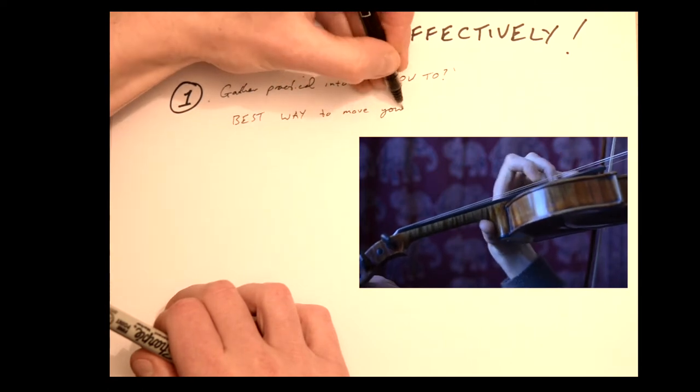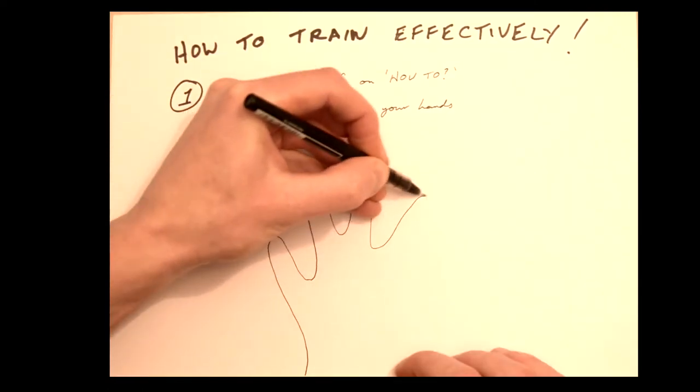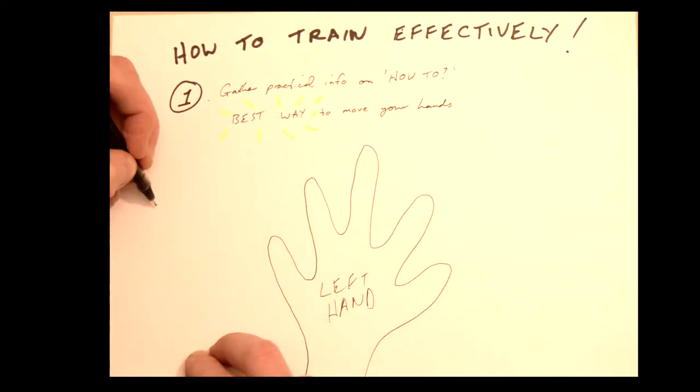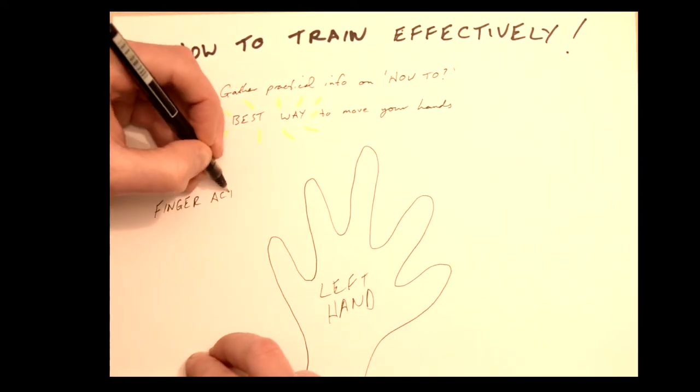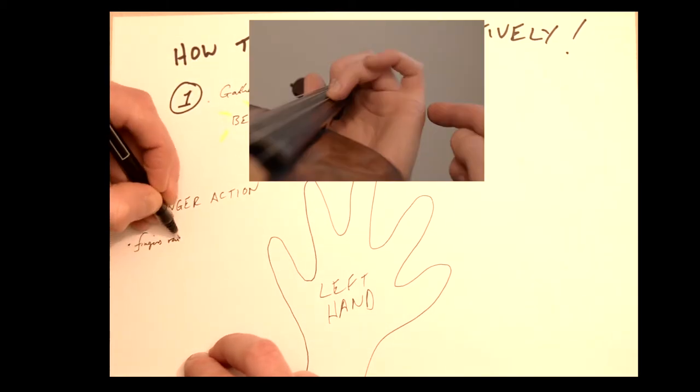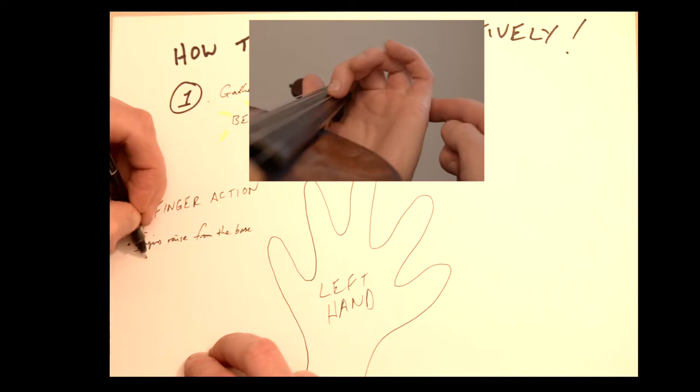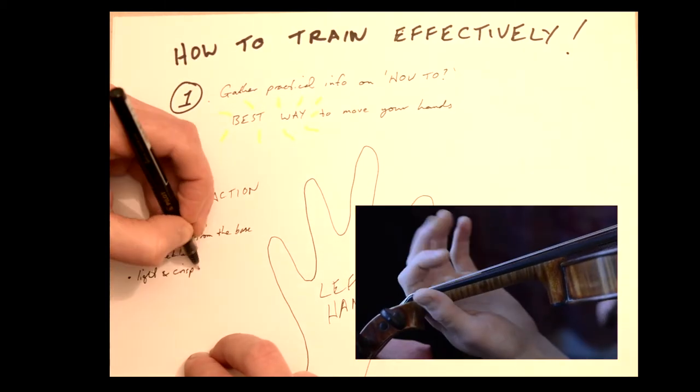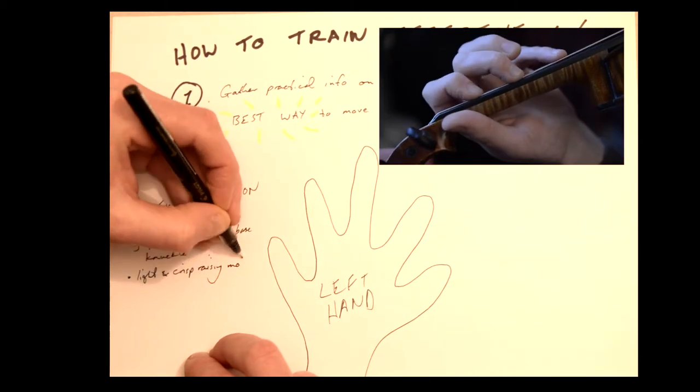We want to be clear about all the nuts and bolts that make up different playing techniques. For example, if we're looking at left hand technique and we're talking about finger action, there are a few essential things to know. That the fingers are raised most efficiently from the base knuckle, that we need a light and crisp raising action, that we need good independence of the fingers, and the list goes on.